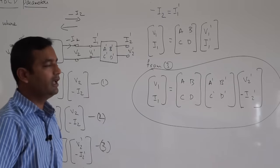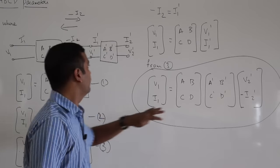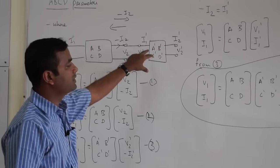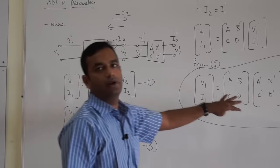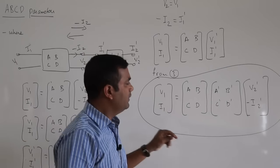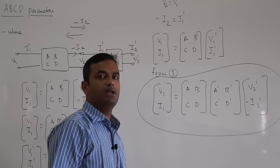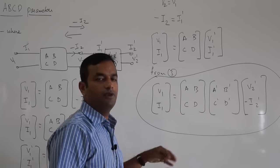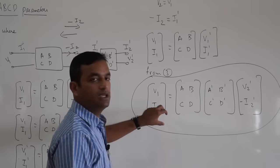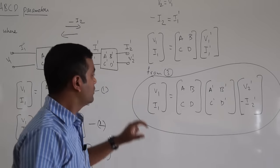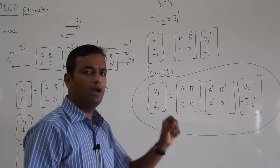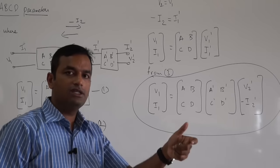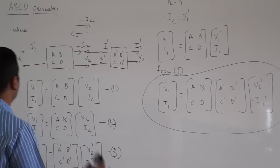And that makes life very simple for us. That is the reason why when we cascade two networks, we go for ABCD parameters. We will do a little more analysis on ABCD parameters because in the future, when we go for S parameters, we will be using ABCD parameters to some extent. Let us do a small analysis of ABCD parameters with respect to an element connected in series and an element connected in parallel.